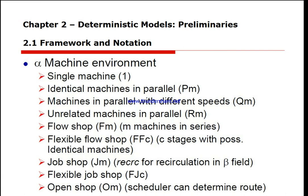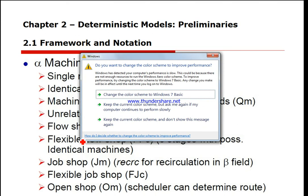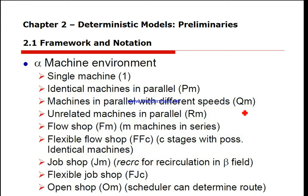Starting with alpha: it could be a single machine — just one machine. It could be identical parallel machines (Pm) where all machines are exactly the same speed and we can use any of them. It could be machines in parallel but with different speeds, where the speed of machine i is v_i and the processing time p_ij equals p_j divided by v_i. Or it could be unrelated machines in parallel, where machine i processes job j at speed v_ij.